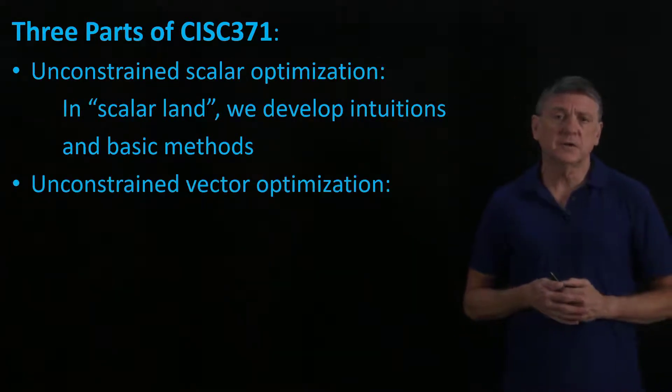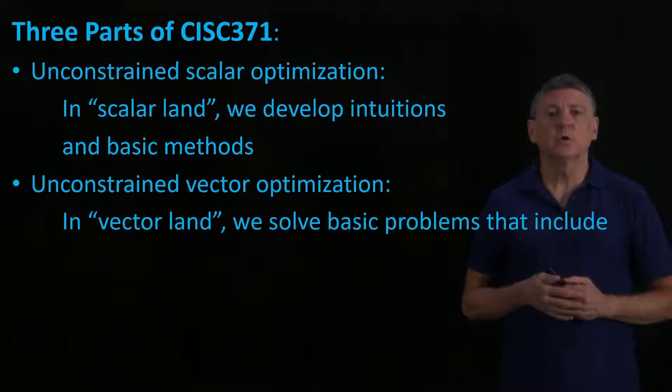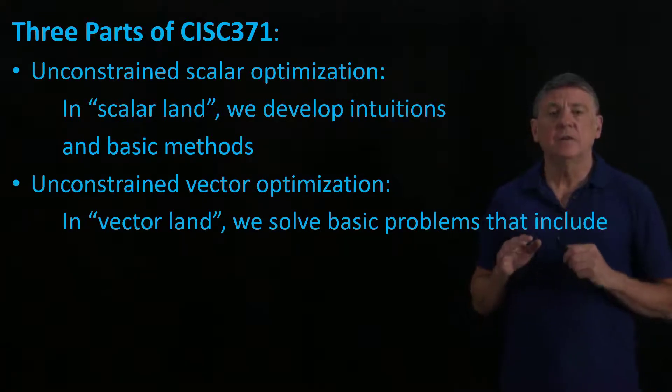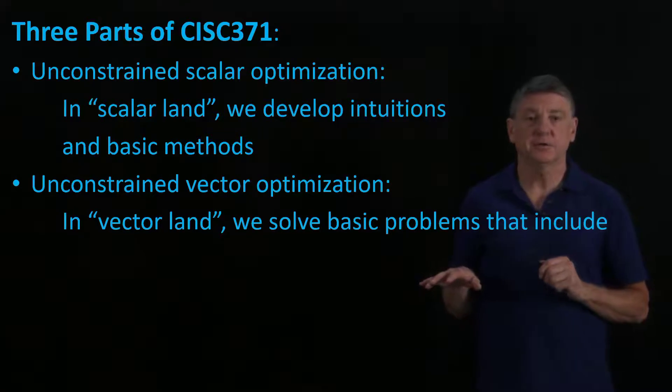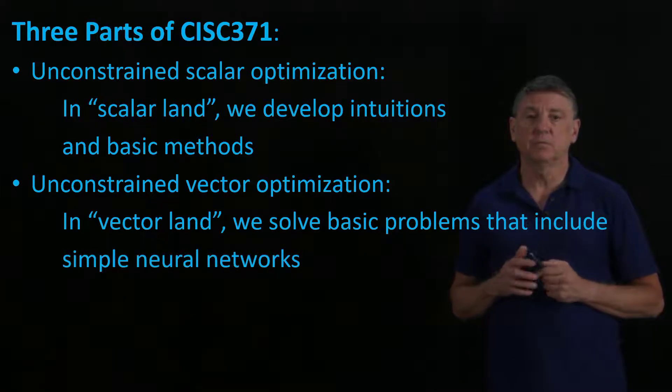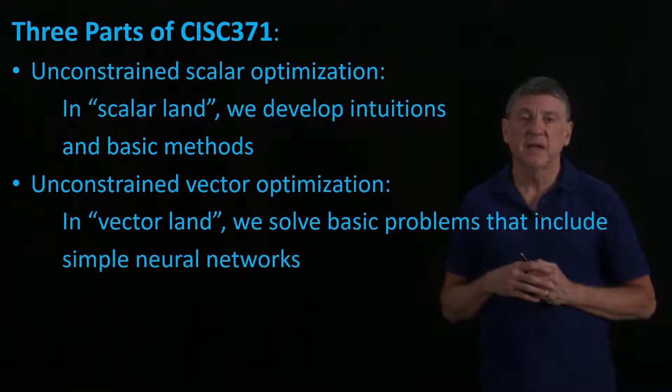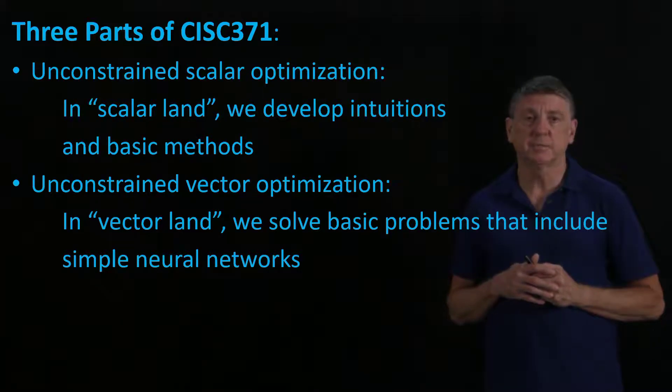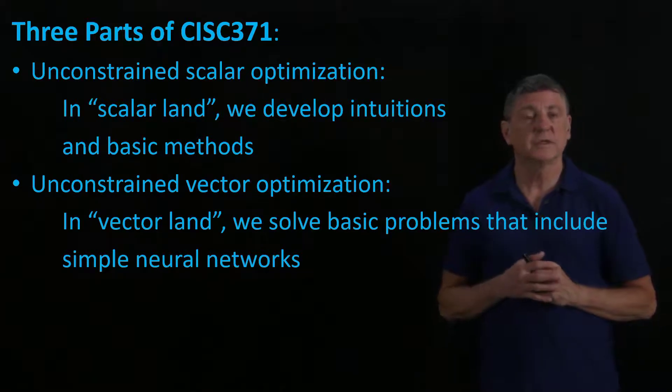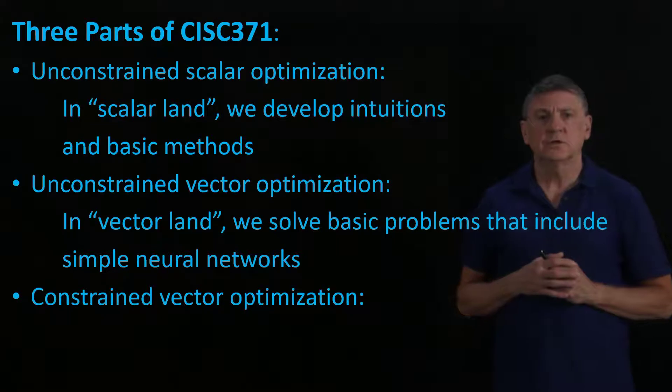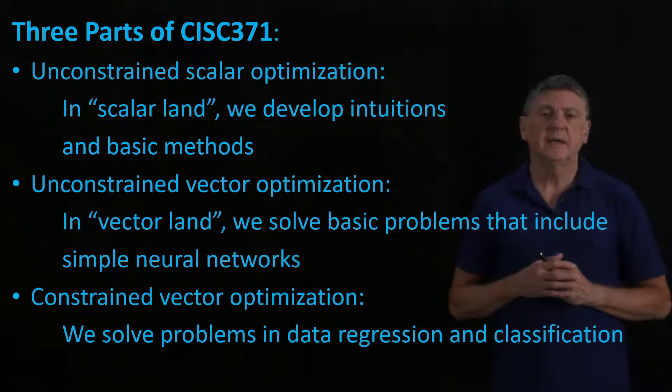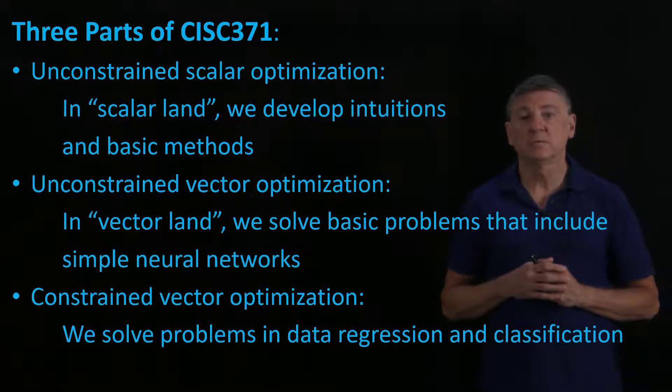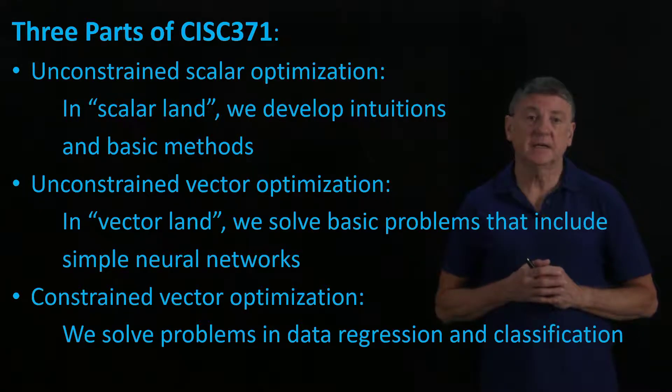In unconstrained vector optimization, we're going to expand that, and now the underlying landscape is going to be vectors. We're going to solve basic problems that include simple neural networks and how the GPS system works in a simple way. Constrained vector optimization is the third part of this course, and in it we're going to solve some serious problems in data regression and data classification.